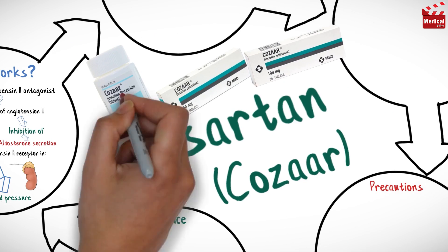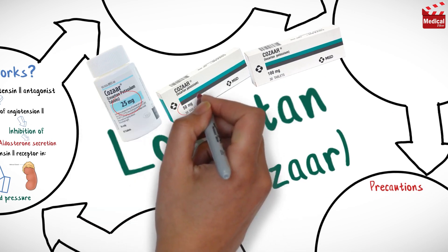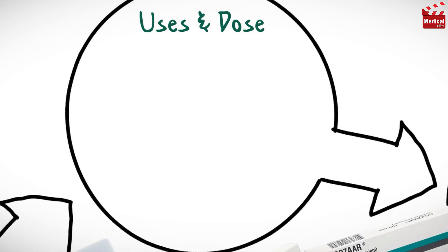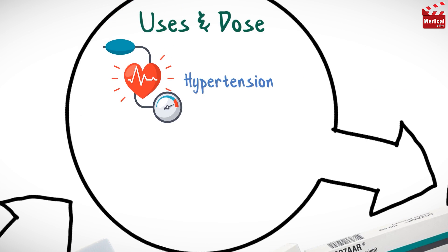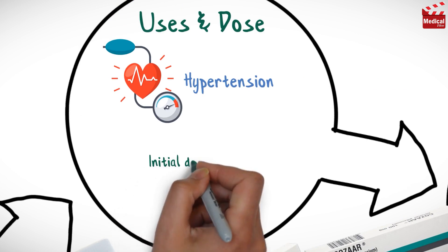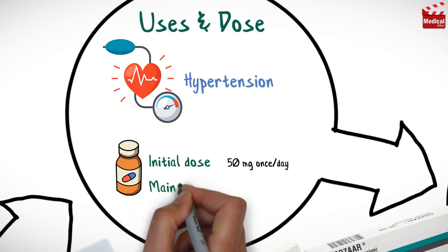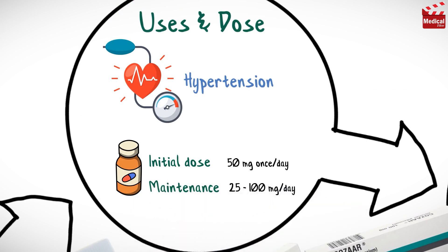It is available as 25, 50, and 100 mg tablets. Losartan is used in the management of hypertension. The usual initial dose of Losartan for adults is 50 mg once daily, and the maintenance dose is 25 to 100 mg per day.